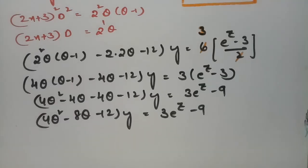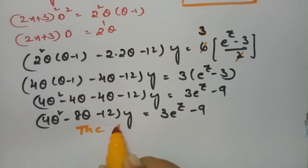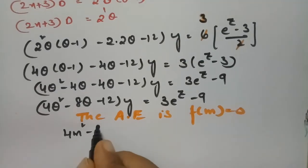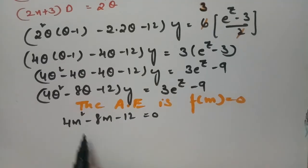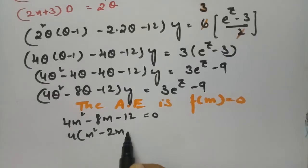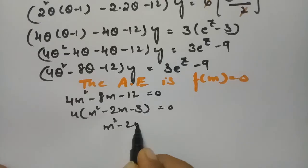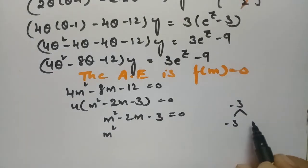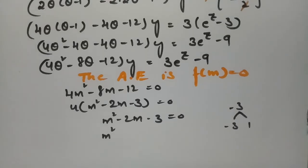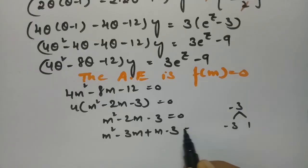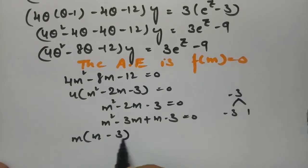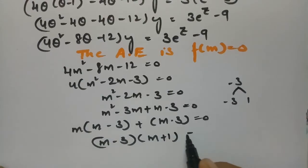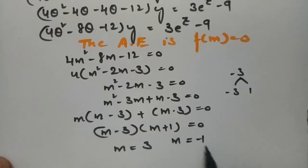Now we find the complementary factor. The auxiliary equation is f(m) = 0: 4m² - 8m - 12 = 0. Taking 4 common: m² - 2m - 3 = 0. Factoring: (m - 3)(m + 1) = 0, giving m - 3 = 0 and m + 1 = 0. Therefore m = 3 and m = -1.